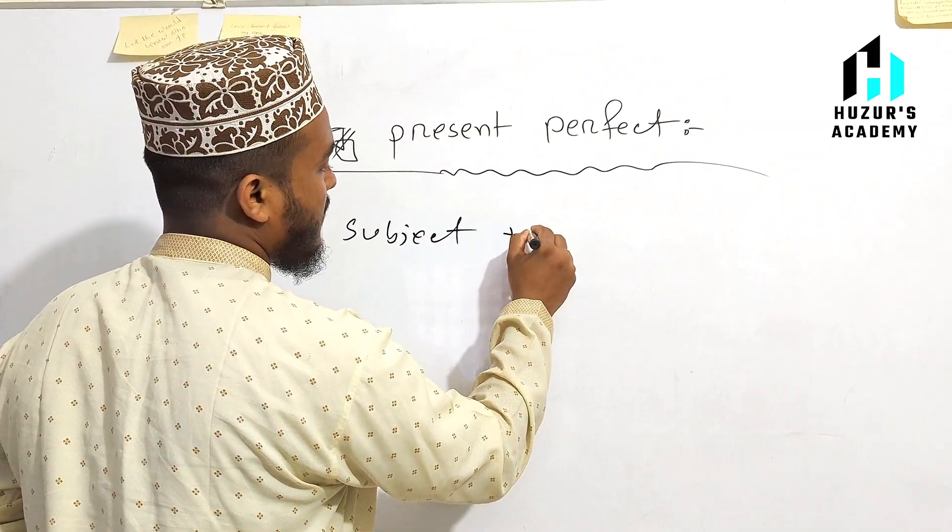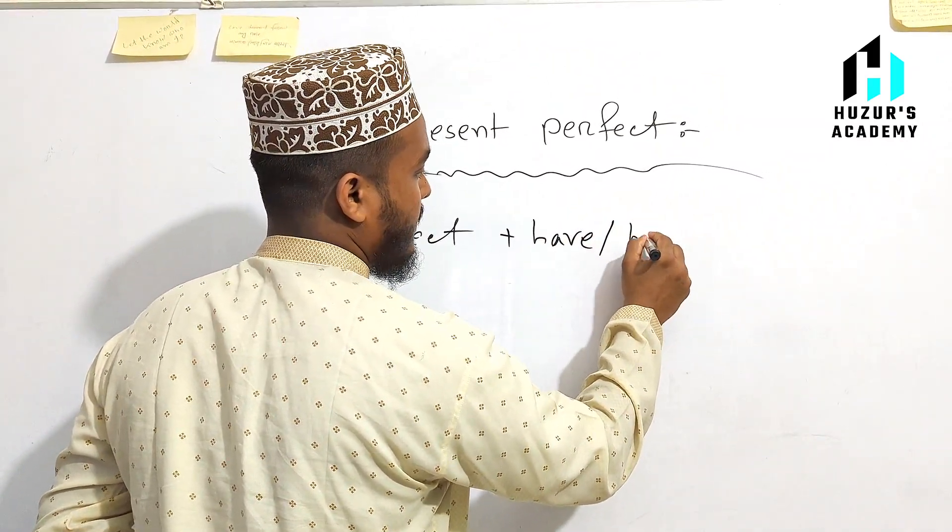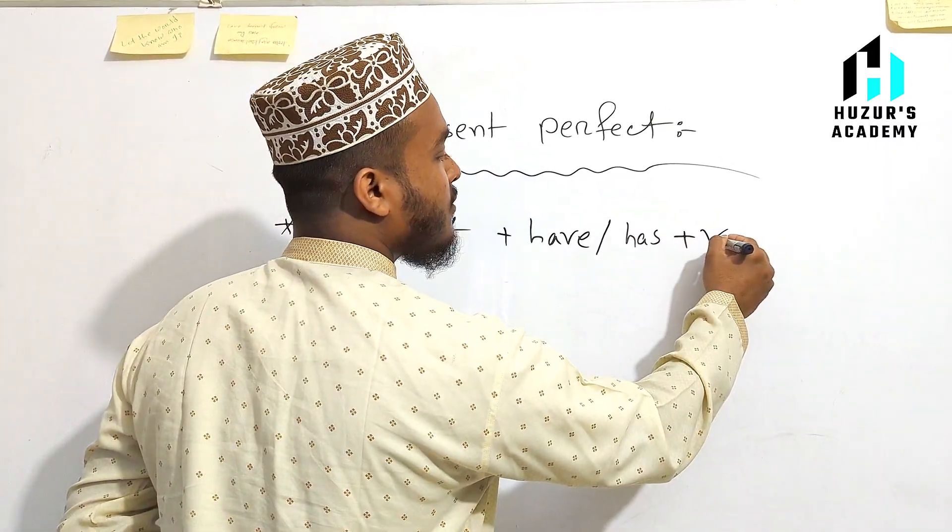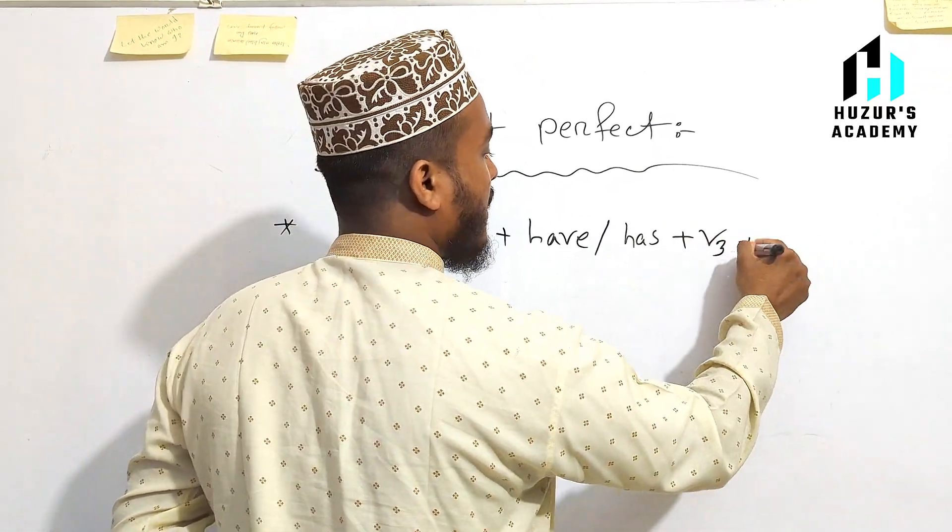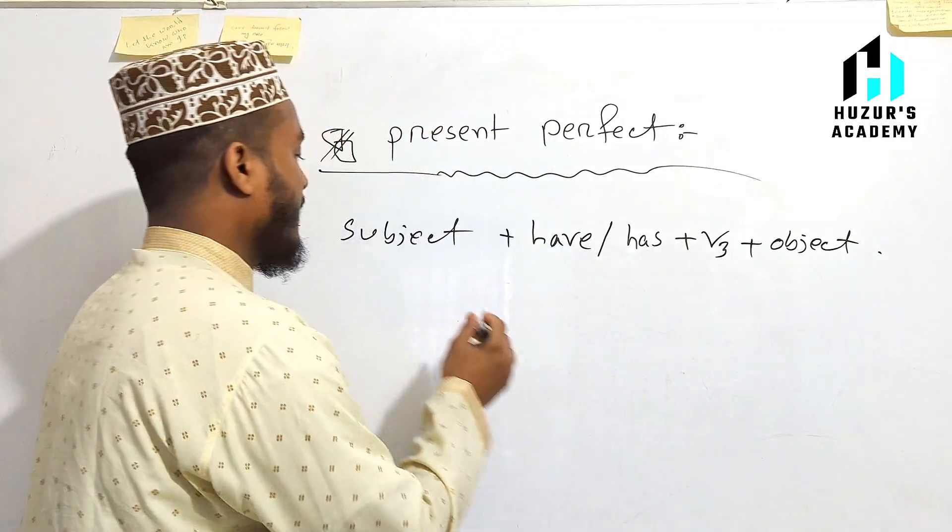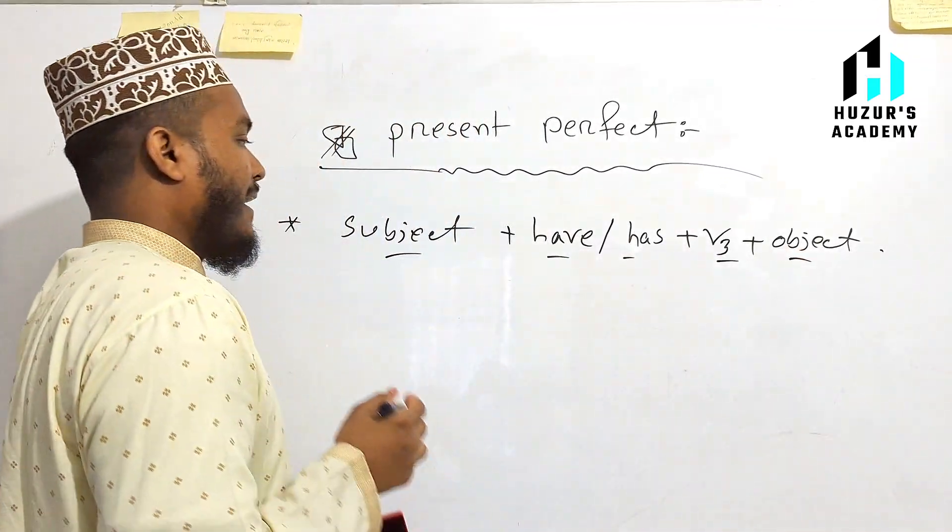Subject plus have and then verb 3 plus object. First of all, subject plus have has plus verb 3 plus object.